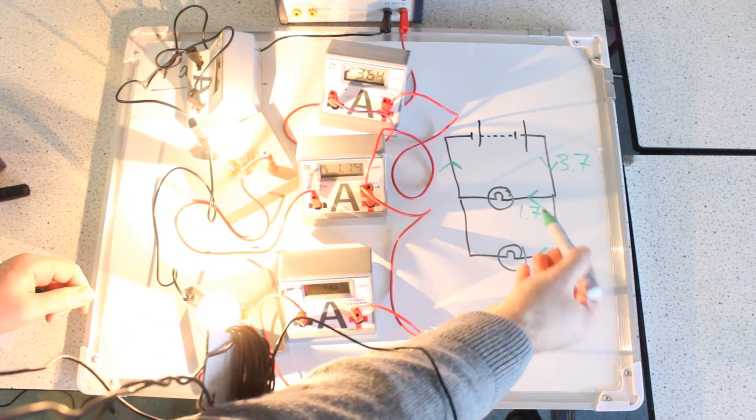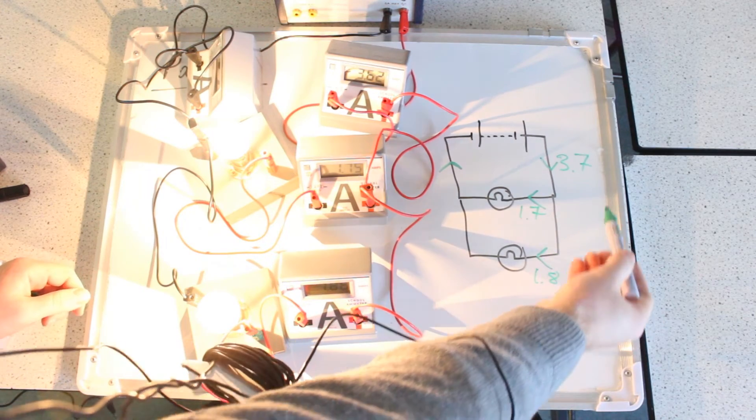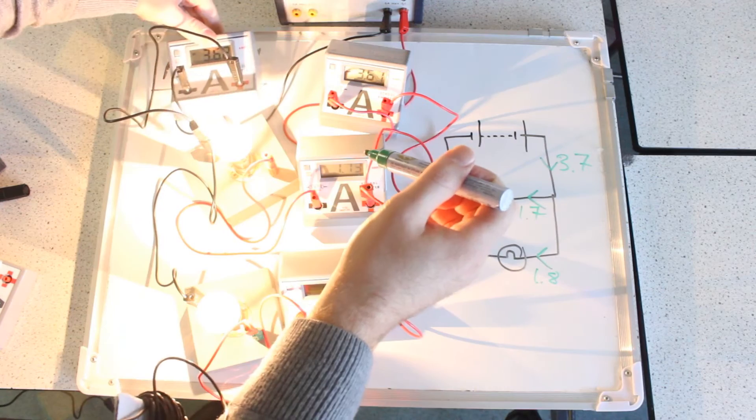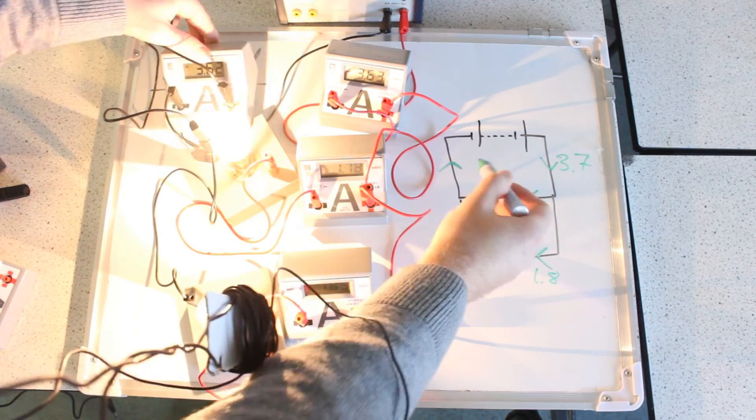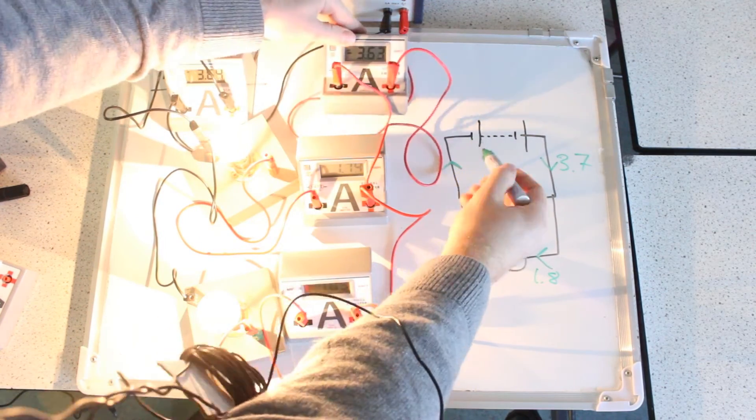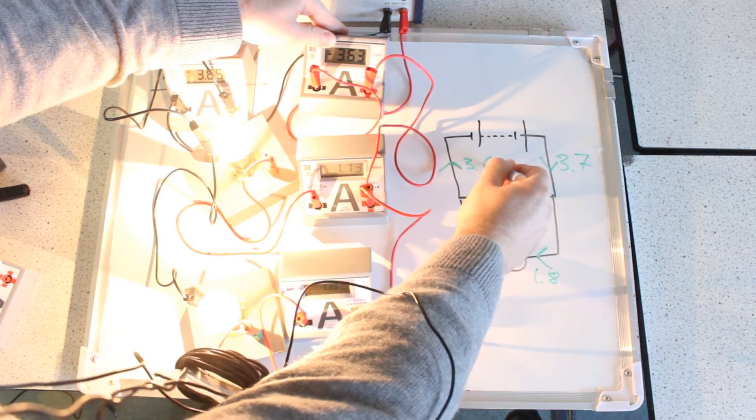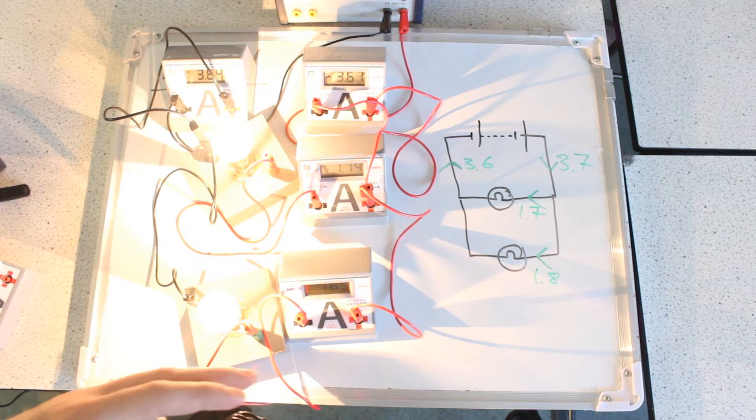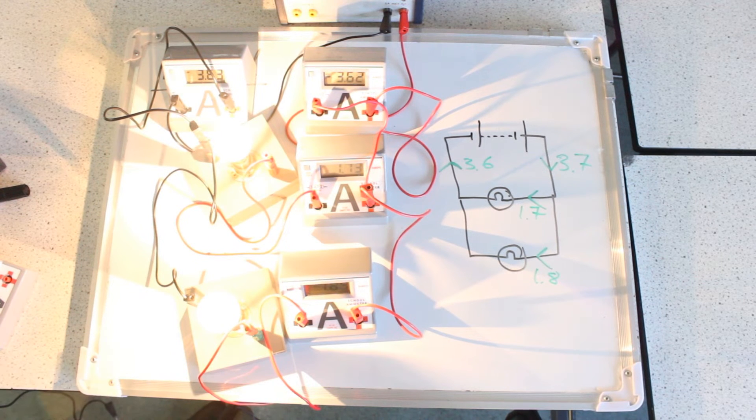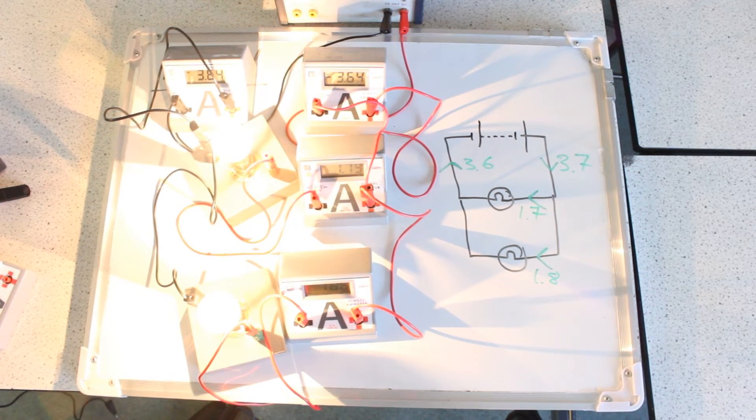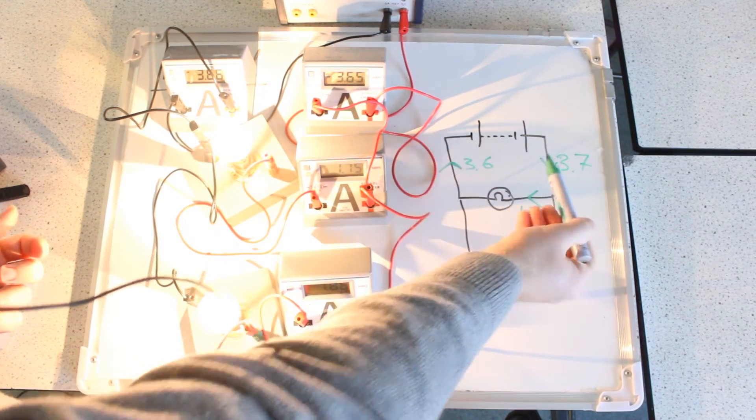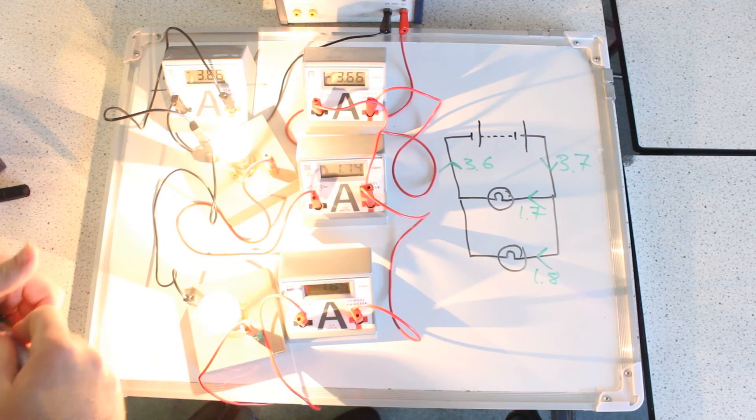And adding them together, I get somewhere near this current here. This current is 3.62 at this time, and that's actually now 3.62 as well. So 3.6. You can hopefully see that within the experimental error, within the boundary of this experiment, the currents in each branch add up to the current in the main part of the circuit, in the power side of the circuit.